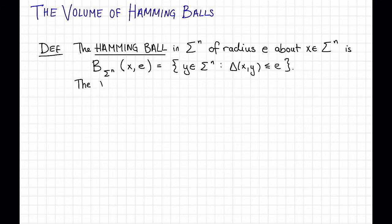The volume of a Hamming ball is just the size of that Hamming ball. I'm going to use the notation vol sub size of sigma of e comma n to denote this. So this is just the number of points in this Hamming ball, b sub sigma to the n of x comma e.